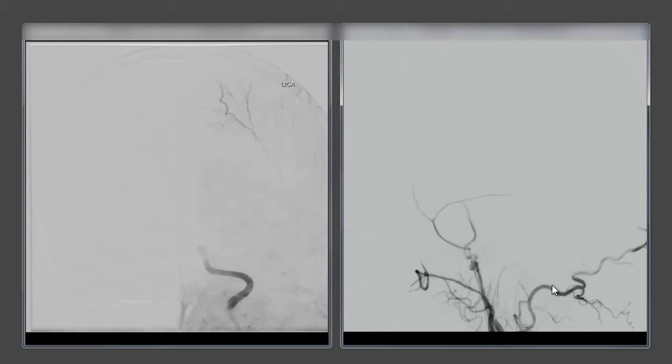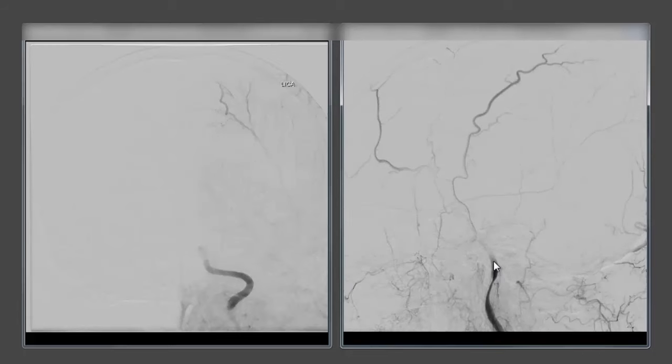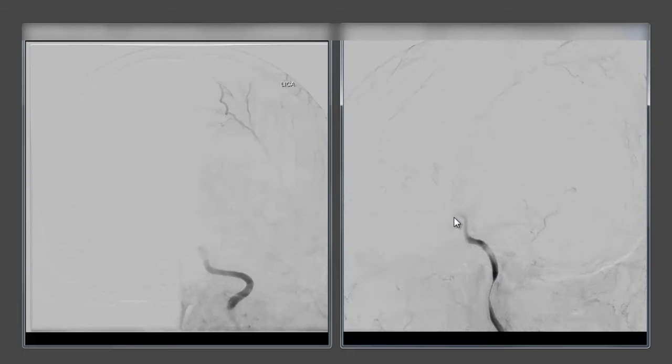Same thing in the side view, contrast opacification of the scalp branches so far we don't see any clear internal carotid artery but now we start to see slow passage of contrast-opacified blood into the internal carotid artery up to or close to the point of the clot at the carotid terminus.